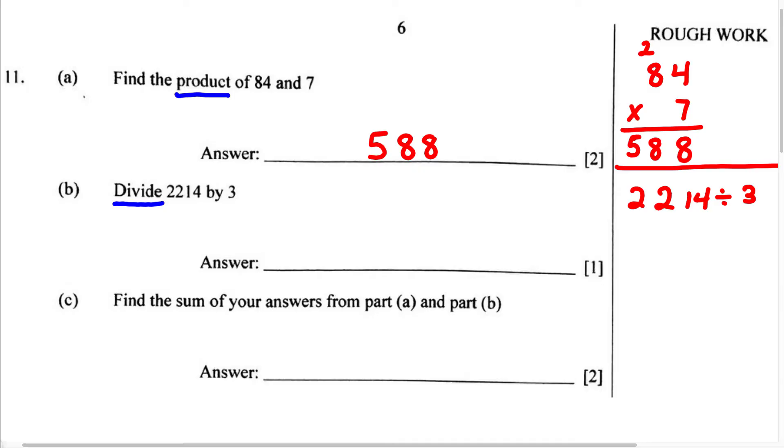Let's use long division. So when we set this up, we know 3 is the divisor and we have 2,214. So 3 can go into 2 zero times. 3 times 0 is 0, we subtract, 2 minus 0 is 2, so we're going to bring down this 2.